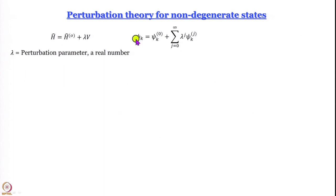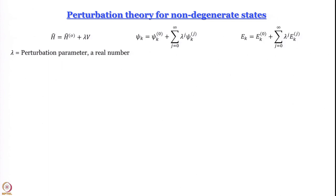The expressions for wave function and energy are more or less the same. The kth state wave function is written as the unperturbed wave function plus a sum of lambda to the power j times the jth order correction to the wave function of the kth level. Similarly, the energy E_k equals the unperturbed energy for the kth state plus the sum over lambda to the power j times E_k^(j).